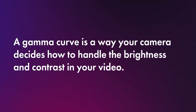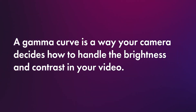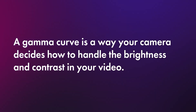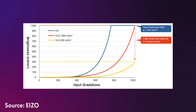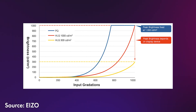Before jumping into the specifics, let's quickly explain what gamma curves are. Essentially, a gamma curve determines how your camera processes the brightness, contrast, and overall tonality of an image. Each profile is designed for a specific workflow or delivery format, so choosing the right one ensures that your footage looks its best on the intended platform.